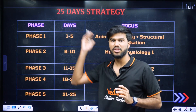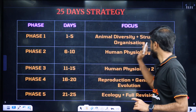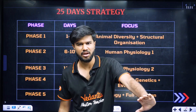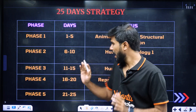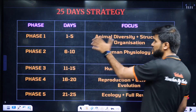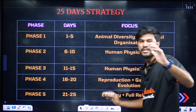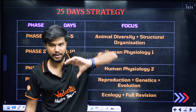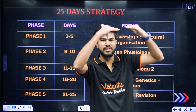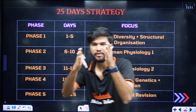In phase 1, we will talk about the living world, animal diversity, animal kingdom, and structural organization — days 1 to 5. Phase 2 covers days 6 to 10: human physiology part 1, including liver diseases, circulation, and related topics.